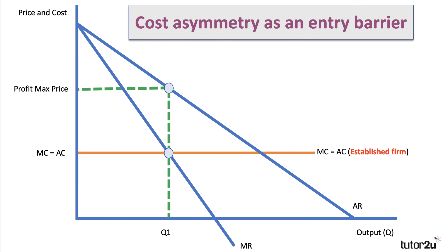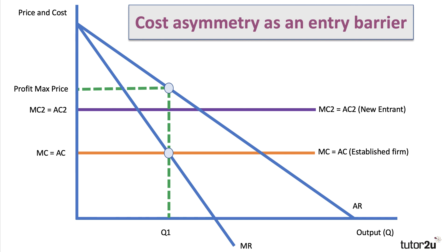The established firm could profit-maximize at output Q1 at the price shown, because they have market power. Cost asymmetry means their average and marginal costs are lower than a potential new entrant's. I've drawn the new entrant's costs on the diagram in purple — you can see quite a big cost advantage between the existing firm and the rival firm.